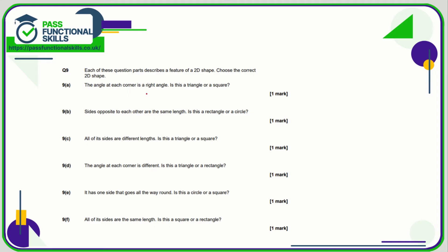Question nine: the angle at each corner is a right angle — is it a triangle or a square? A triangle could have one right angle but not at each corner, so it's a square. Sides opposite each other are the same length — rectangle or circle? A circle has only one side, so it's a rectangle. All sides are different lengths — triangle or square? A square has all sides the same length, so this is a triangle. The angle at each corner is different — triangle or rectangle? In a rectangle every angle is 90 degrees, so it's the triangle.